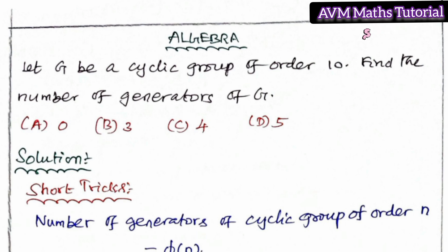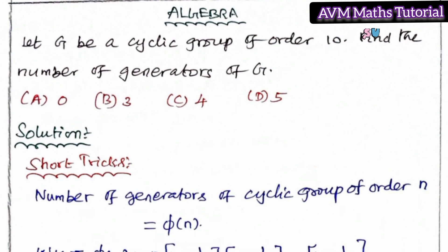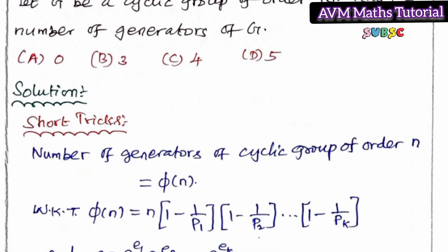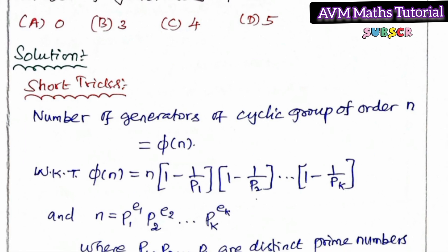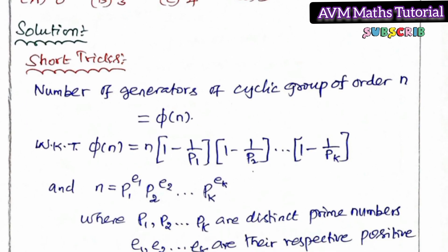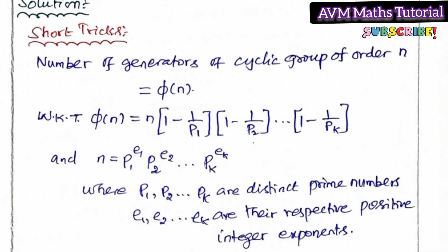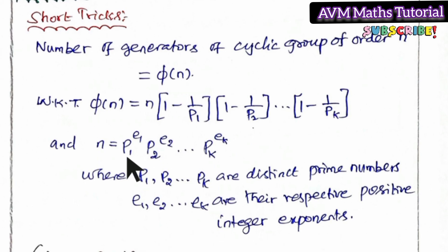For a cyclic group of order n, the number of generators is given using the prime factorization. If the order has prime factors P1, P2, ..., Pk with powers E1, E2, ..., Ek, we apply the formula accordingly.